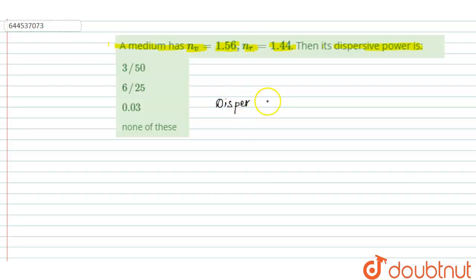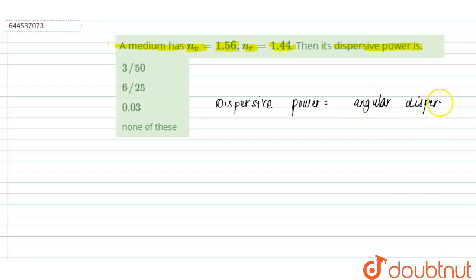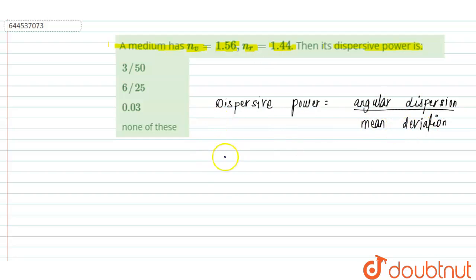Dispersive power is defined as the ratio of angular dispersion upon mean deviation. So dispersive power equals angular dispersion divided by mean deviation.